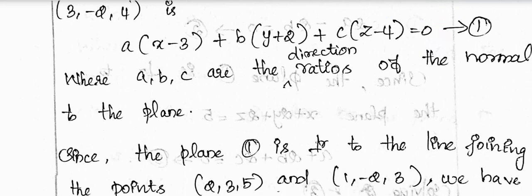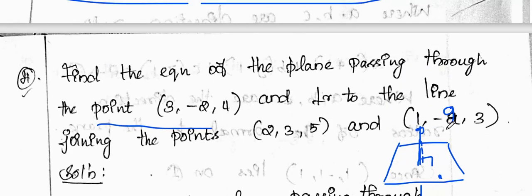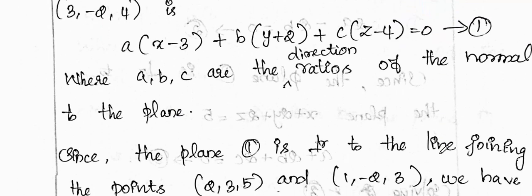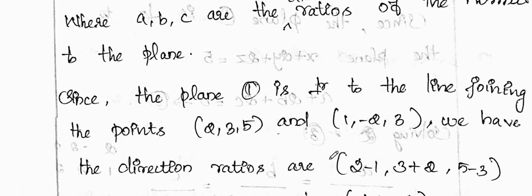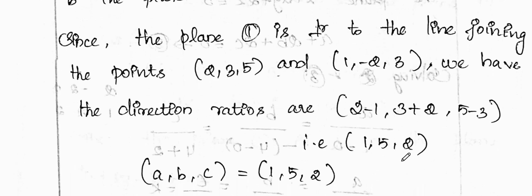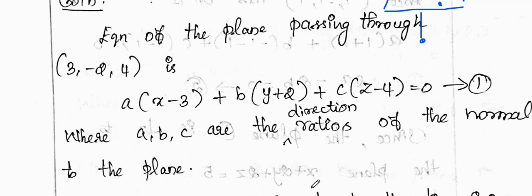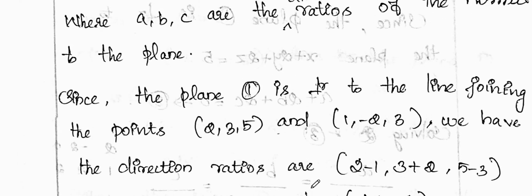Since the plane is perpendicular to the line joining the points (2, 3, 5) and (1, -2, 3), the direction ratios of the normal are obtained from these two points: (2-1, 3-(-2), 5-3) = (1, 5, 2).